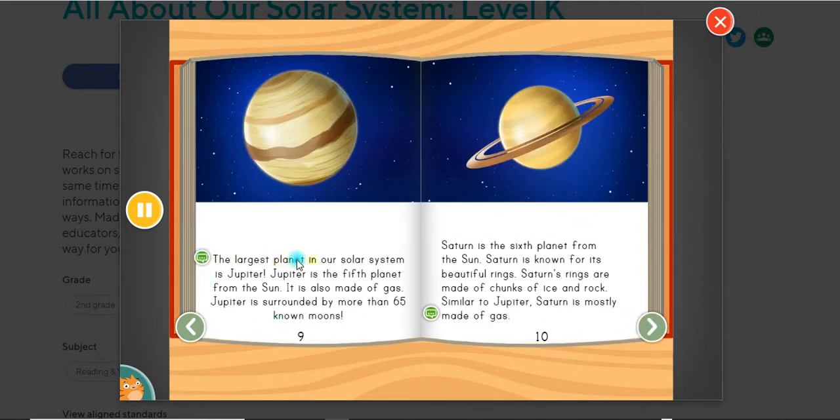The largest planet in our solar system is Jupiter. Jupiter is the fifth planet from the Sun. It is also made of gas. Jupiter is surrounded by more than 65 known moons.